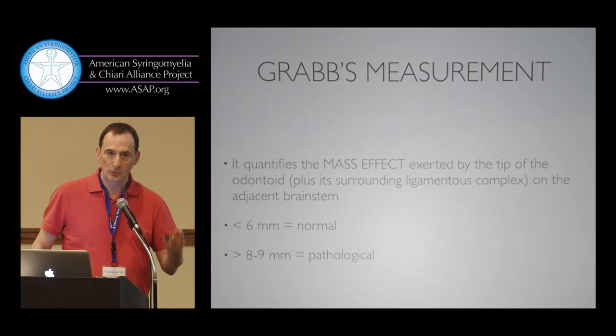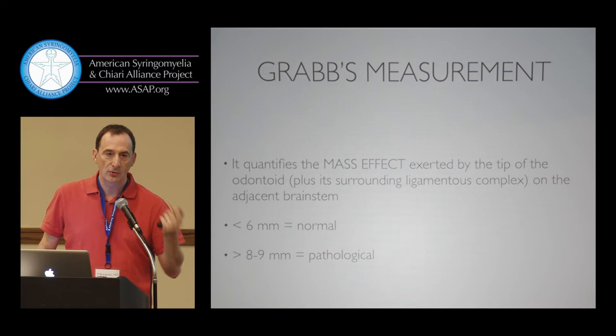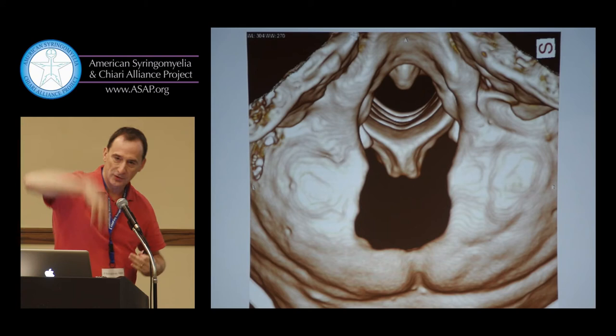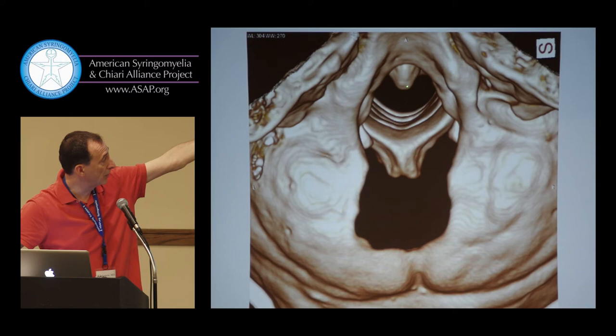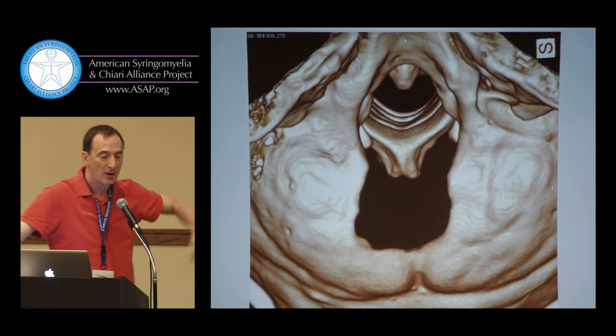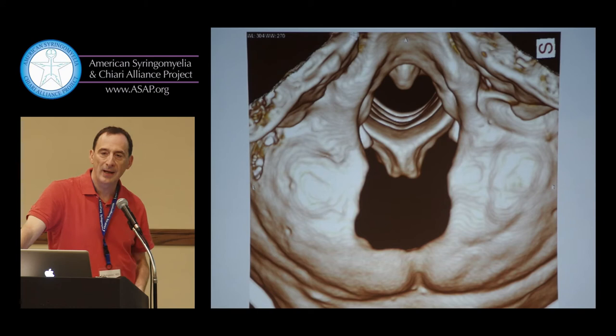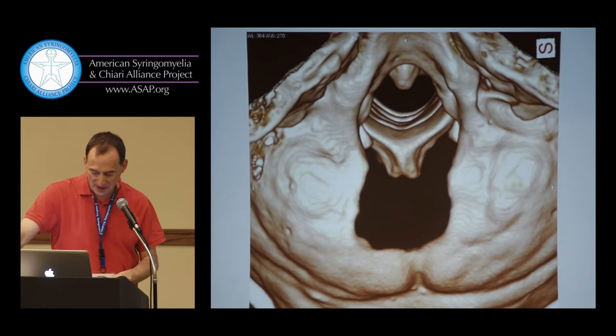Everything above 8 or 9 millimeters is to be considered pathological — it doesn't necessarily mean you need surgery, but it means you have a complex Chiari if you also have Chiari-1 malformation. Imagine cutting the back of the top of the skull and looking down the pipe — a retroflex odontoid creates a large bony spur projecting backwards, and that is minus the ligament; adding the ligament shows how much mass effect you have.